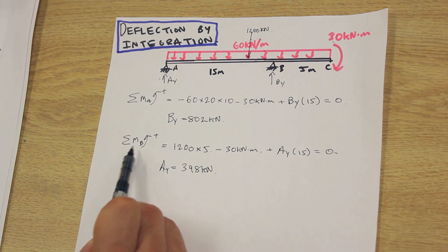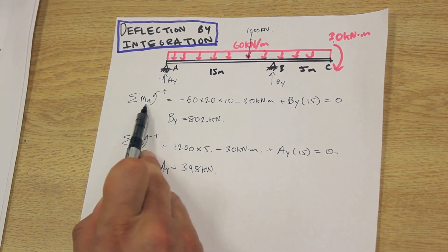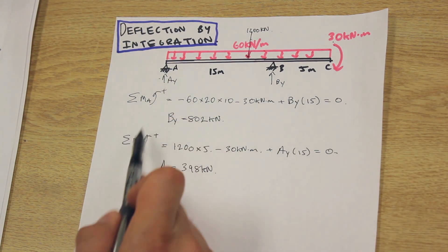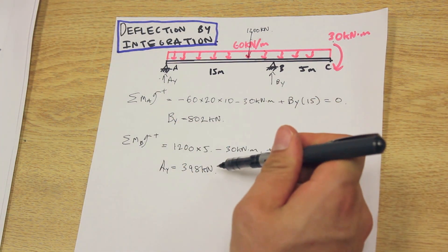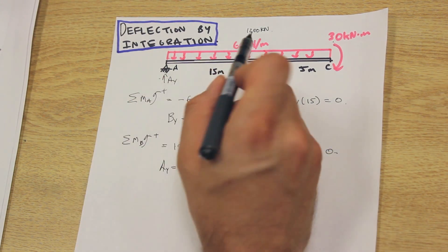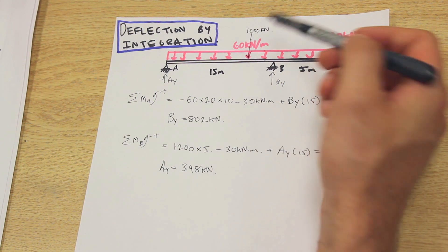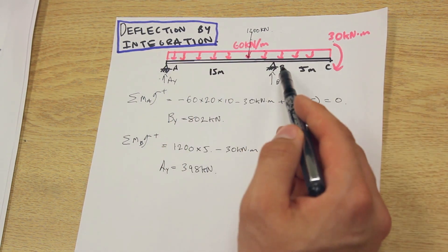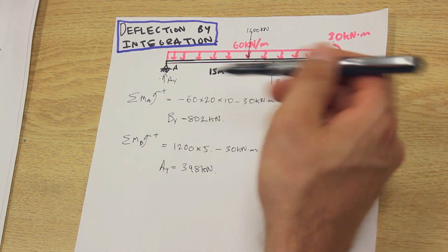This way, when we take both moments, we can add these two together. As you can see, 802 plus 398 will equal 1200 kilonewtons, and these two need to equal the total summation of external forces—not the moment but just the forces—and it does here. That means our reactions are correct.